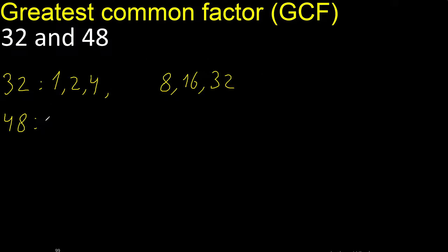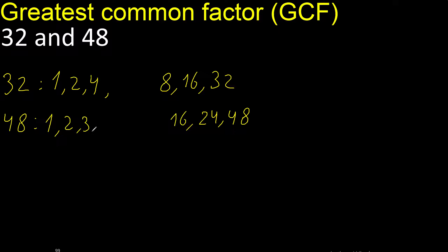Factors always start with 1. 48 divided by 1 is 48. Divided by 2, divided by 3. 48 divided by 4. Cannot be divided by 5. Divided by 6 is 8.